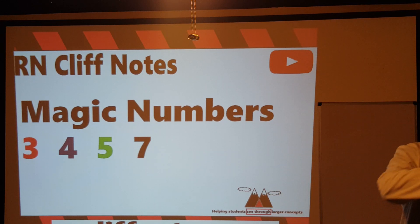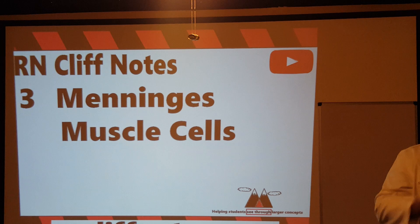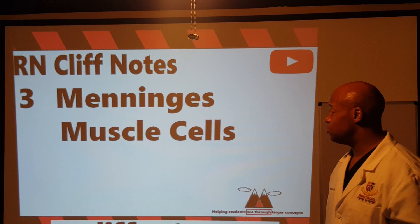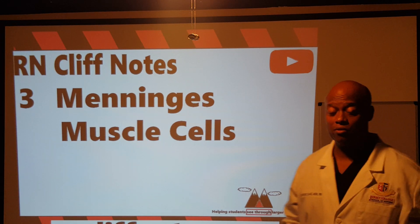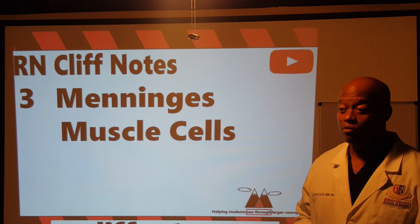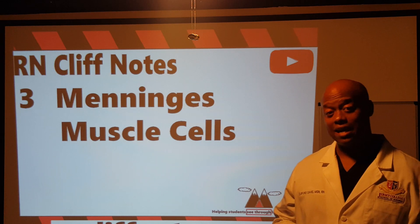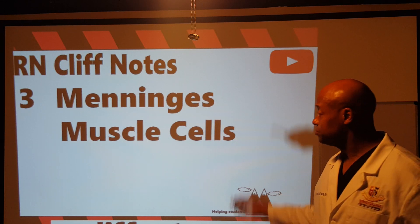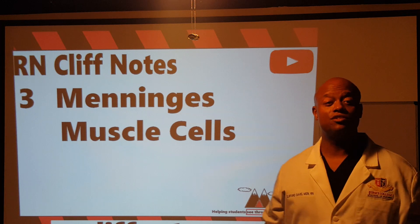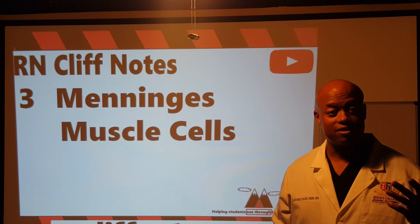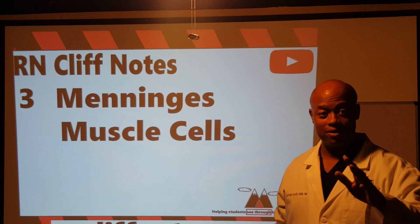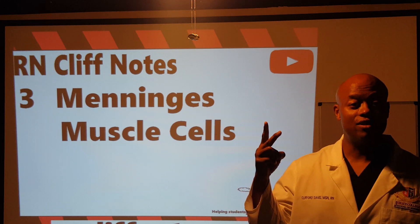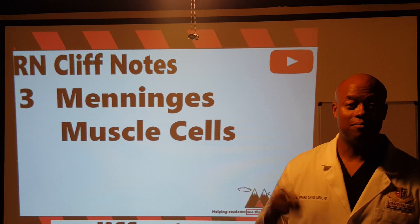Let's talk about that number three. What do we have three of in our body? We have three of lots of things. Just to name a couple — three meninges. What are our three meninges? Dura mater, arachnoid, and pia mater.